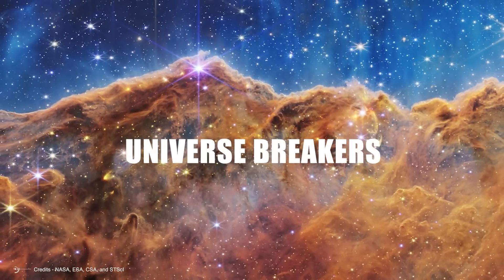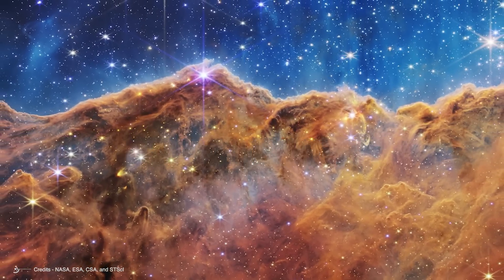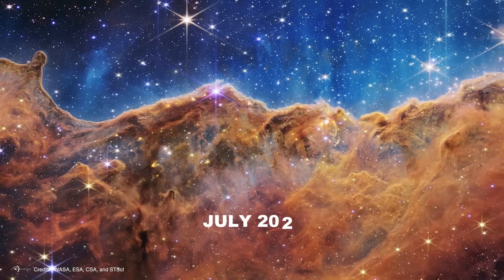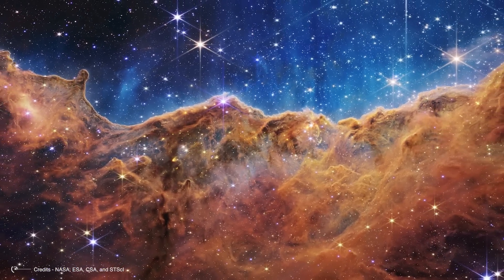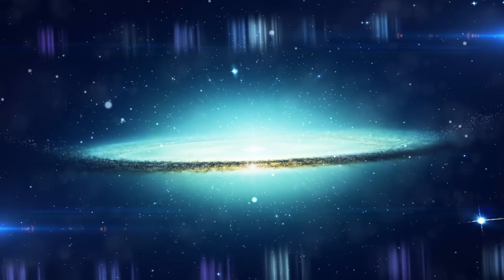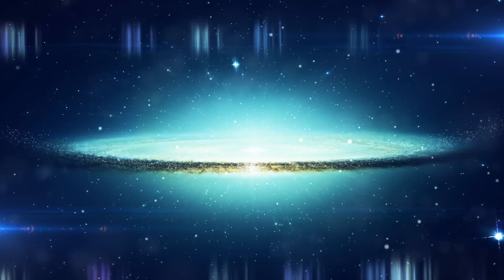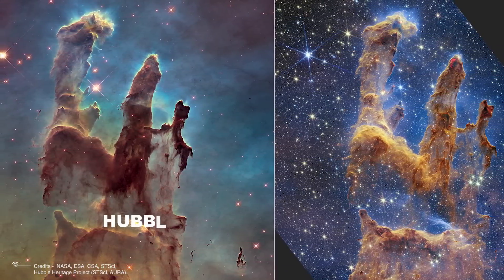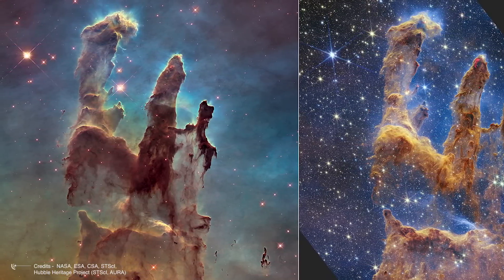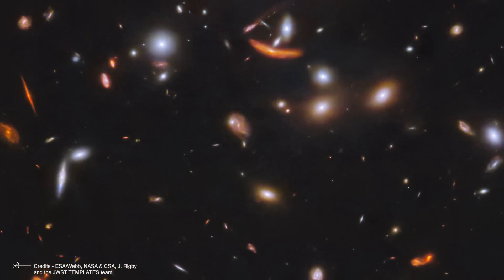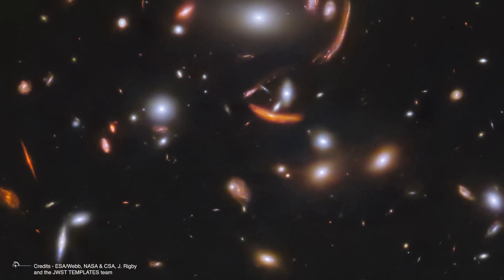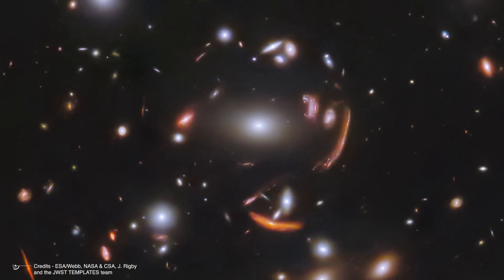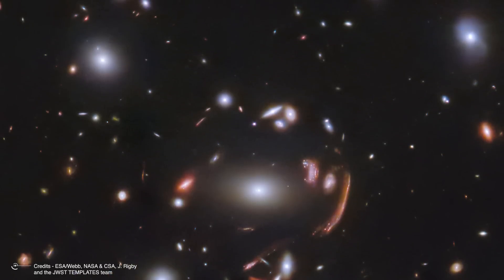Universe Breakers. When the first images from the James Webb Space Telescope were released in July of 2022, astronomers and space enthusiasts were left in awe. The high-resolution images of distant galaxies were unlike anything we'd ever seen before, with a level of detail that made previous images from telescopes like Hubble seem blurry in comparison. But amidst the excitement, researchers noticed something odd in one of the images. A tiny, suspiciously bright red dot that didn't quite add up.